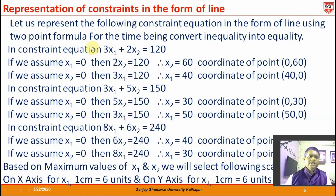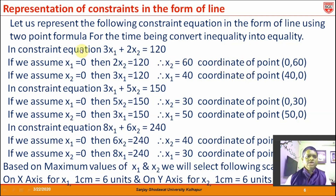In this question, three constraint equations are given. The first is 3x₁ + 2x₂ ≤ 120. We need to identify two points lying on this line so that the equation can be represented as a line. The simplest method is to first assume x₁ = 0, which gives the coordinate of x₂, and then assume x₂ = 0, which gives the coordinate of x₁. This gives us two points lying on the line.